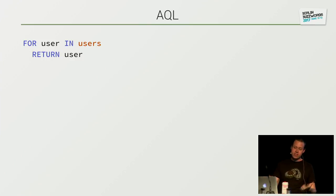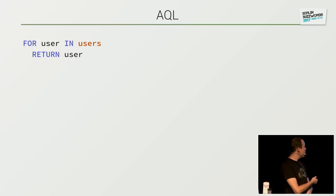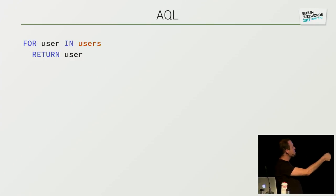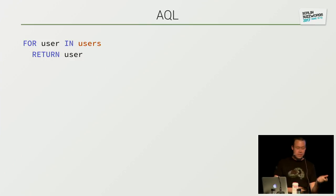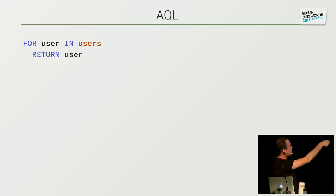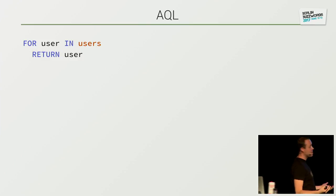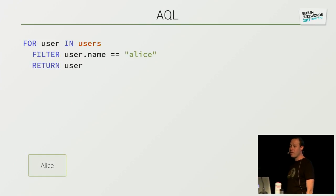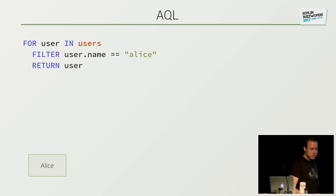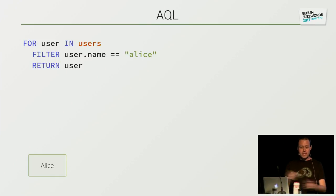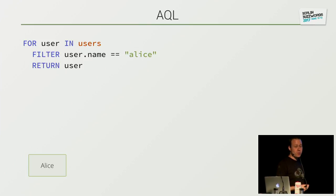Speaking about AQL — just a short crash course on how it works. The easiest AQL query you can think of is the following: we always start with the FOR loop. For user in users — we have a collection users, which is like a table storing all our users — and for every element in there we just RETURN it. So it's the same as SELECT * FROM users. Of course we can combine it with arbitrary filtering: for every user inside users, please check if the username is equal to Alice, and if true, return this user. And if you have defined an index on name, this query will automatically use it — you will never say please use this or that index; the query optimizer will figure out which is the best index.